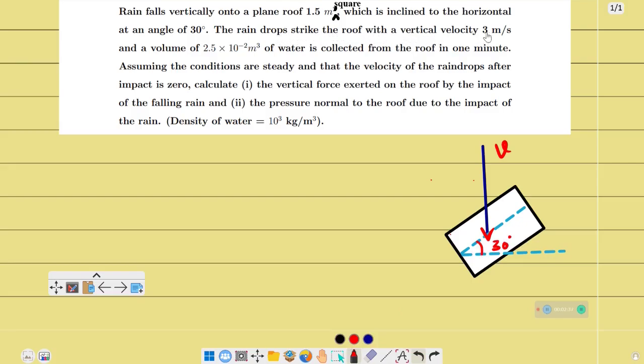The roof is struck with vertical velocity 3 meters per second, and a volume of 2.5 times 10 to the power minus 2 cubic meters of water is collected from the roof in one minute. So the volume collected in one minute is capital V, which is 2.5 times 10 to the power minus 2 cubic meters. The volume per time is V over t.